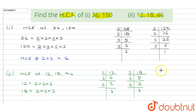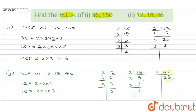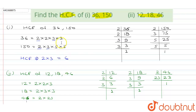Now let's factorize 46. Since 46 is divisible by 2, we divide to get 23. And 23 is a prime number, not divisible by any other number except 23 itself. So the factorization of 46 is 2 × 23.